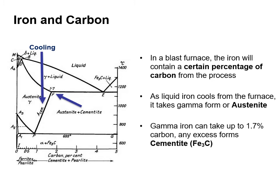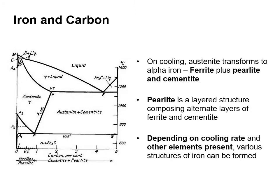In a blast furnace, the iron will contain a certain percentage of carbon from the process. As liquid iron cools from the furnace, it takes gamma form, or austenite. Gamma iron can take up to 1.7% carbon, and any excess forms cementite or Fe₃C. On cooling, austenite transforms to alpha iron — ferrite plus pearlite and cementite. Pearlite is a layered structure comprising alternate layers of ferrite and cementite.